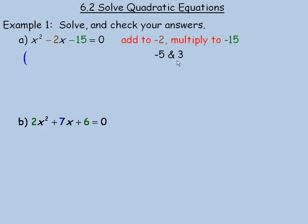Since the numbers are negative 5 and 3, this factors into (x minus 5) times (x plus 3). Think of what's in the brackets as two different things — the first bracket multiplied by the second bracket — and the product of those two things equals 0. If two things multiply to give you 0, then either the first one is 0, or the second one is 0, or both could be 0.